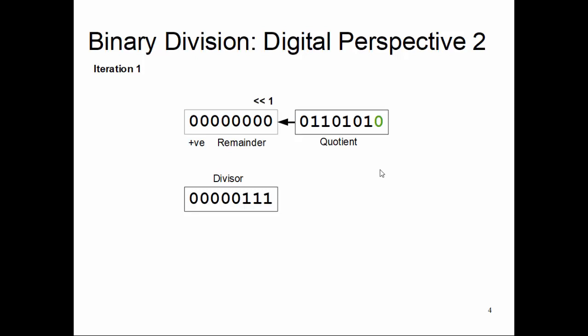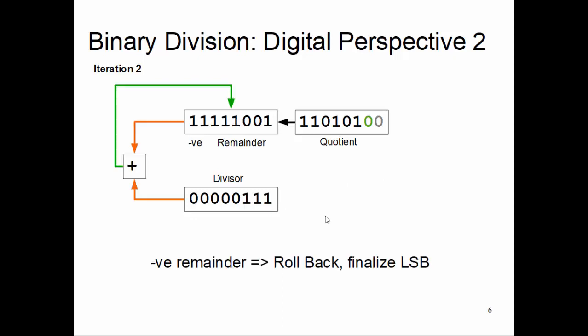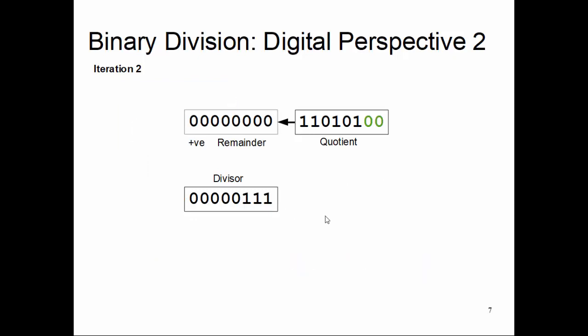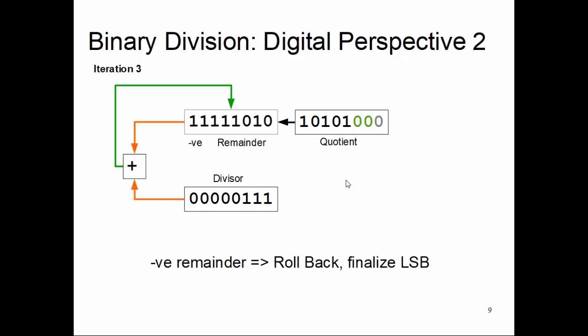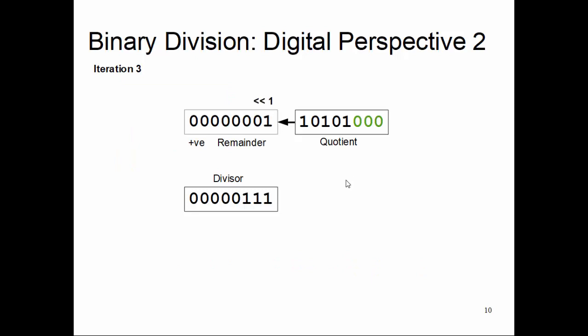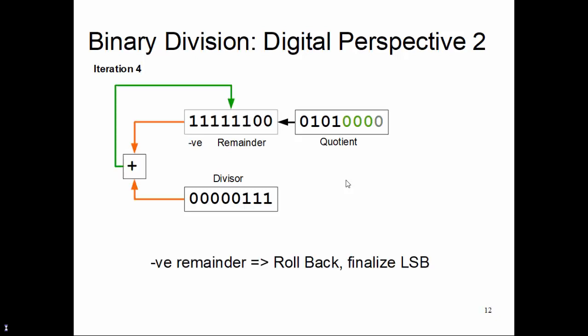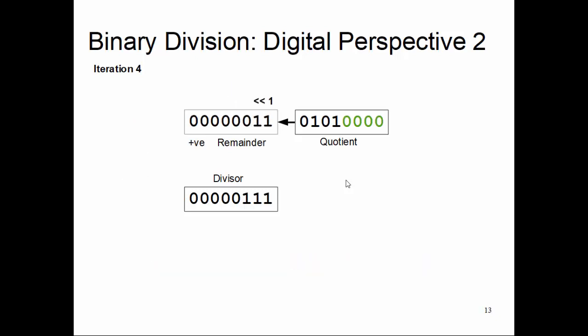Iteration, iteration. You shift one more that brings you to iteration two. So you shift to the right, that brings you to iteration two. You do a subtraction, negative result, roll back, finalize. Another shift to the right, the whole thing, remainder quotient register together. Subtraction, negative remainder, roll back, finalize.